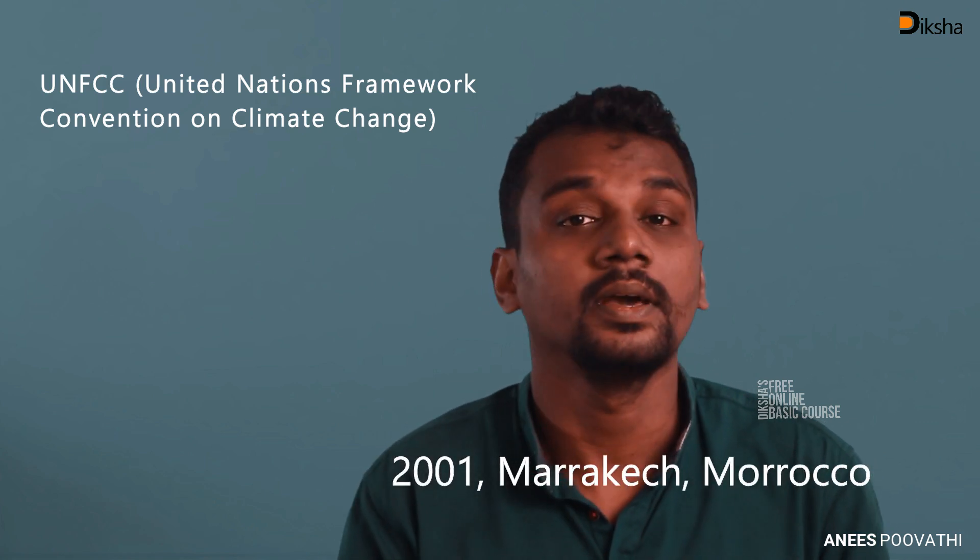The third COP happened in 1997 in Kyoto, Japan — the Kyoto Protocol originated from this. COP 7 happened in the year 2001 in Marrakesh, Morocco. I will be discussing the significance of Marrakesh later. Then COP 18 took place in the year 2012 in Doha, Qatar. Then the 21st COP took place in 2015 in Paris, France. There is an importance of both the Doha Conference and Paris Conference, which I will discuss later.